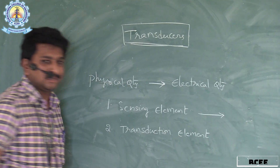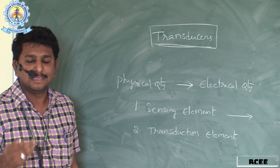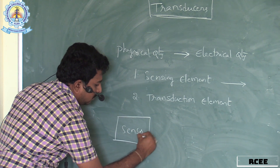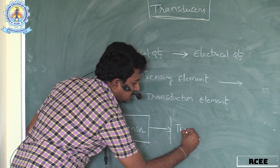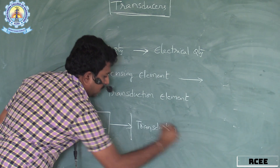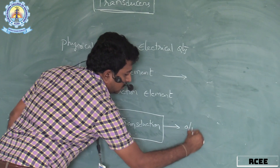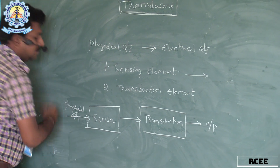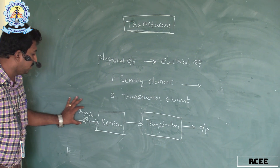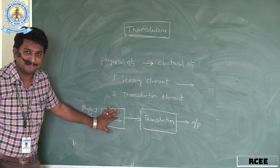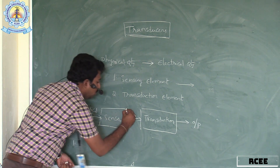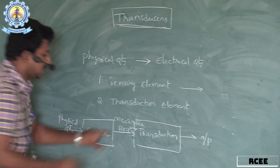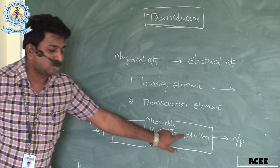The purpose of the sensing element is: whenever we give a physical quantity as input, here I am drawing the diagram — this is the sensor (sensing element) and this is the second part (transduction element). The physical quantity is given as input, and whenever it reaches the sensing element, it is converted into a measurable response.